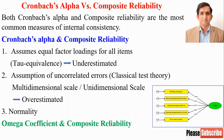The second difference is that error terms should be uncorrelated. This is the hypothesis of classical test theory. This assumption can be violated when we have a multi-dimensional scale.